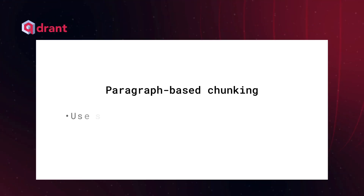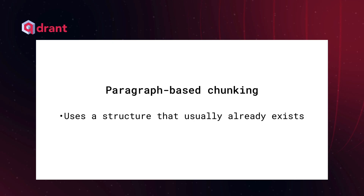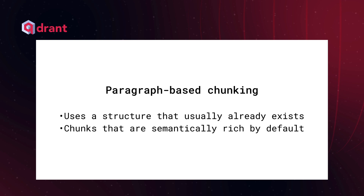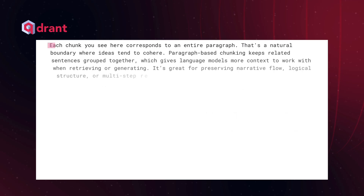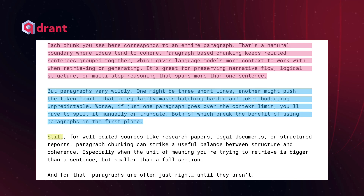The next method is paragraph-based chunking. Paragraph-based chunking leans into a structure that usually already exists, especially in articles, books, blogs, or even emails. Since most writers usually write paragraphs around topics, if we break our text into paragraphs, we usually get more semantically meaningful chunks by default. But paragraphs are unpredictable — one can be a single line and another can be an entire page. So in those cases, you might need to layer in token limits or fallback splitting. Still, when the structure is clean and predictable, this method works extremely well.